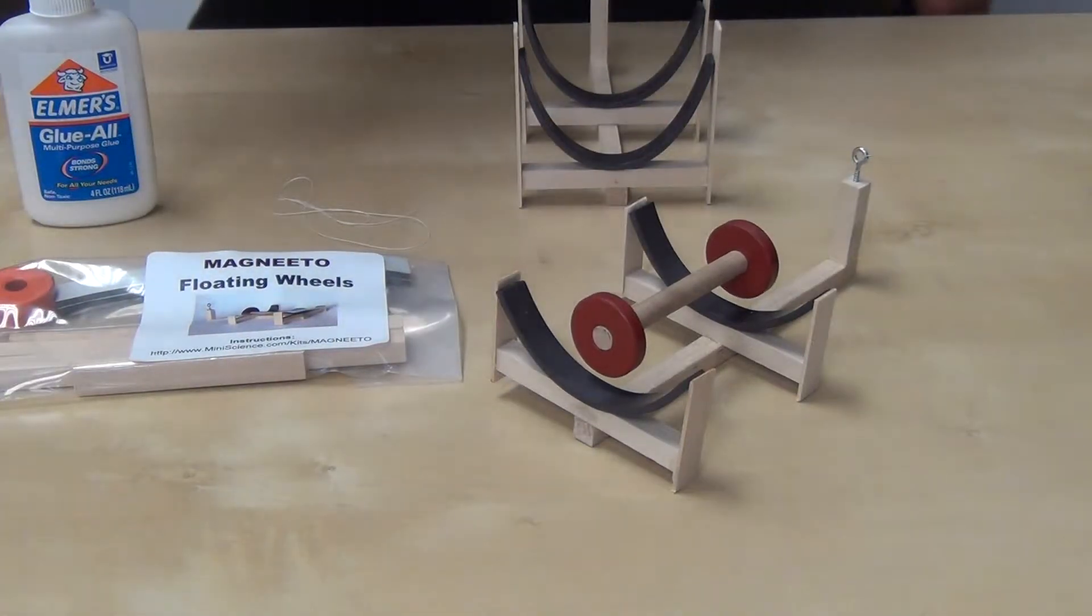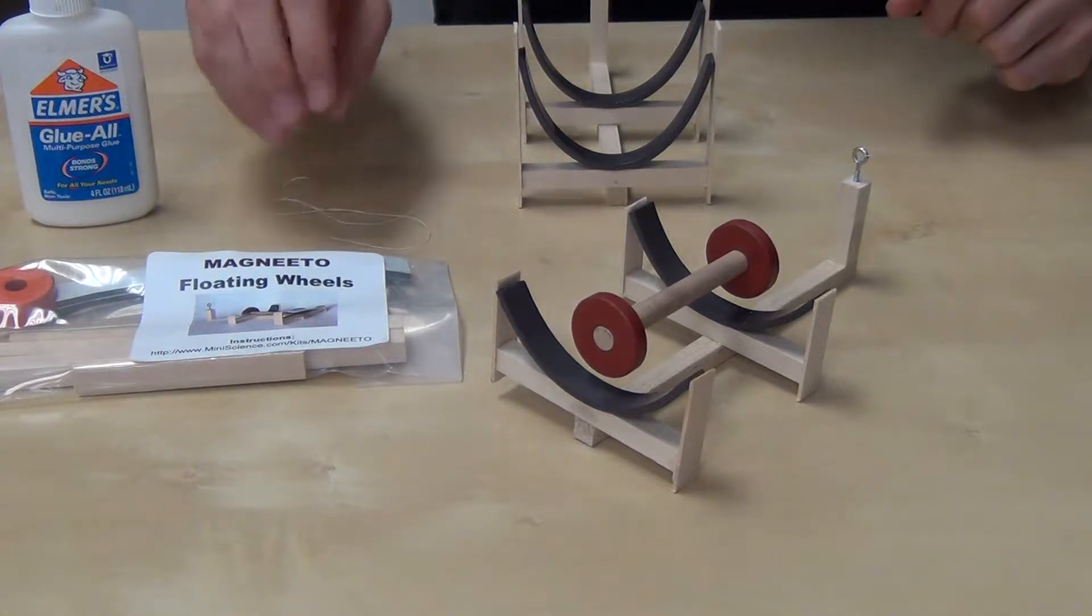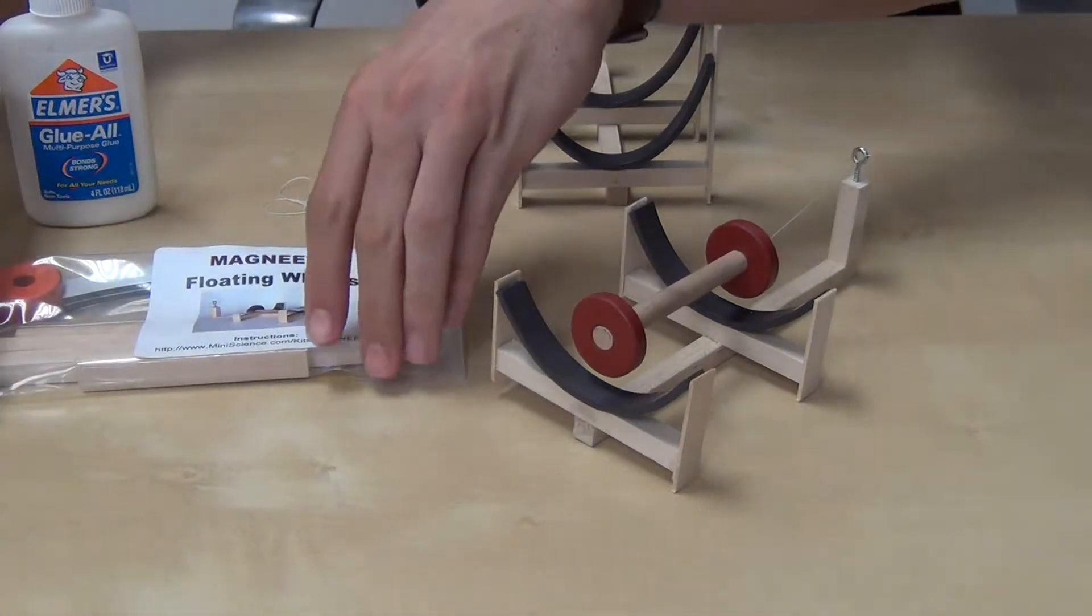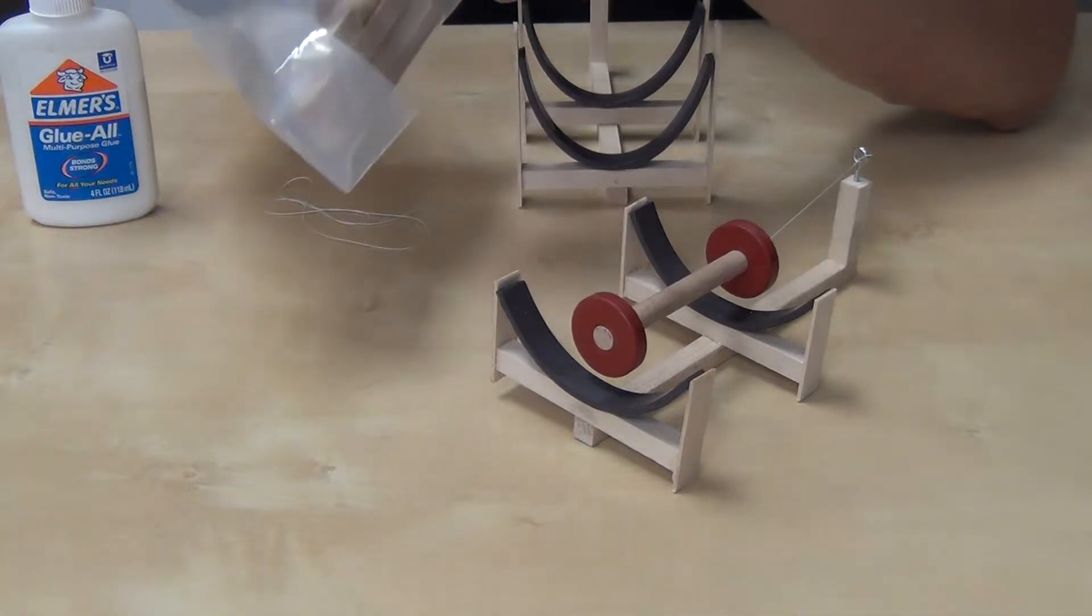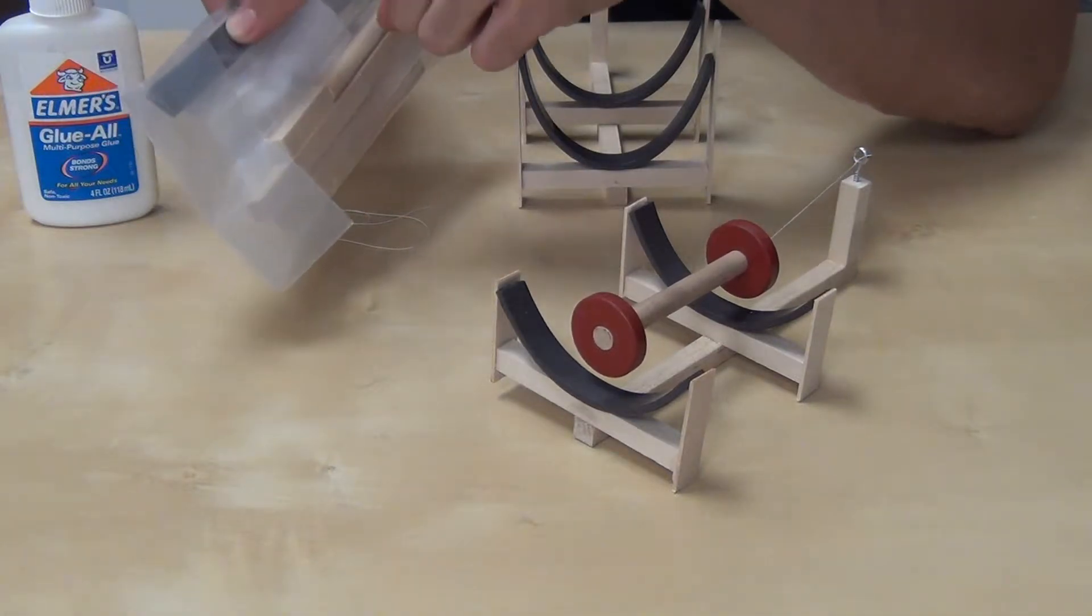Hi everyone, here we have the Magneto floating wheels, which is the new version of the floating wheels. Instead of the square or rectangular disc magnets, we now use magnet strips.